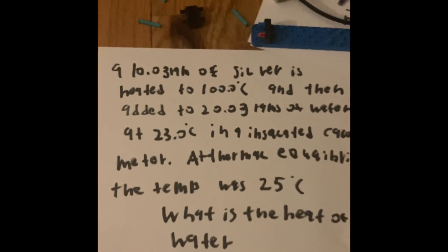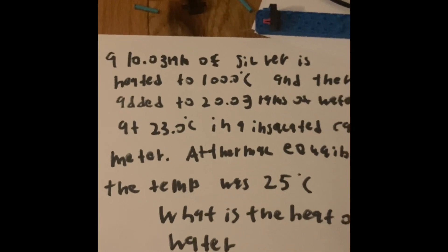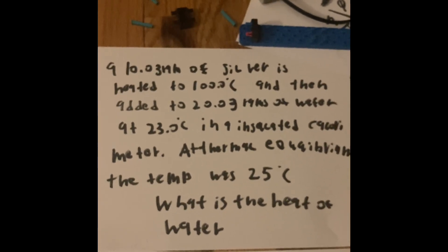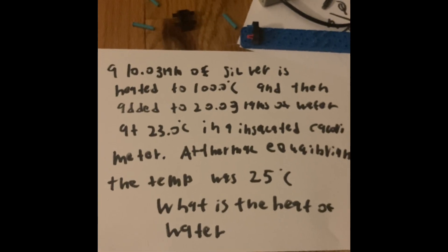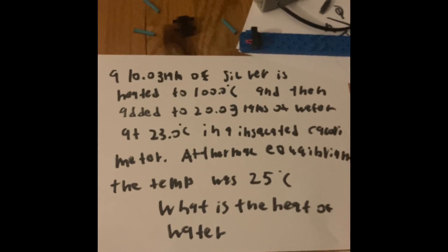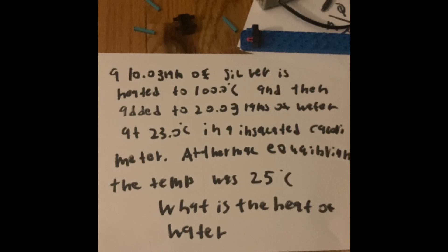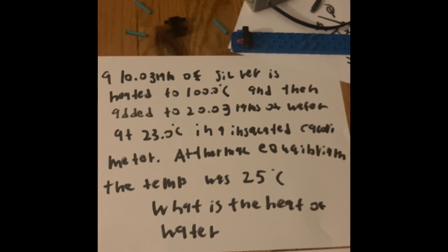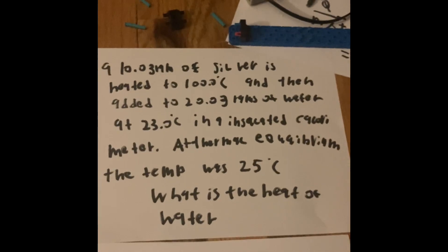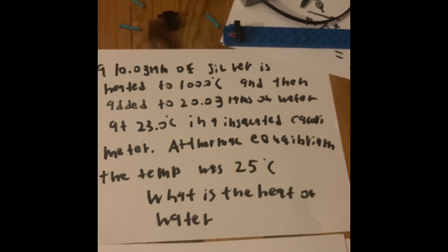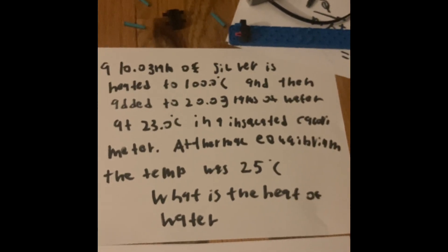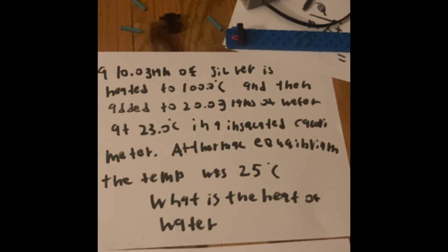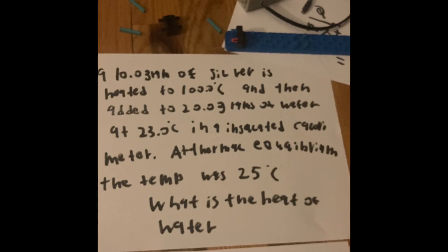A 10 gram of silver is heated up to 100 degrees Celsius, and then is put into 20 grams of water at 23 degrees Celsius in an insulated calorimeter. A calorimeter is a measurement tool.